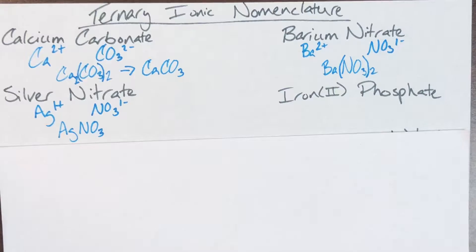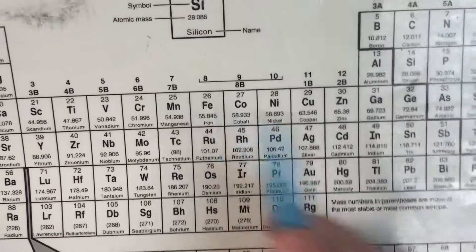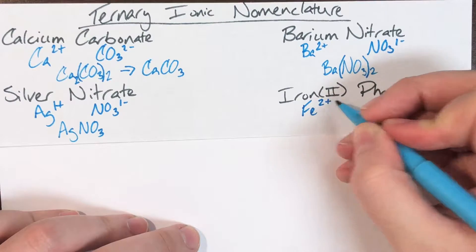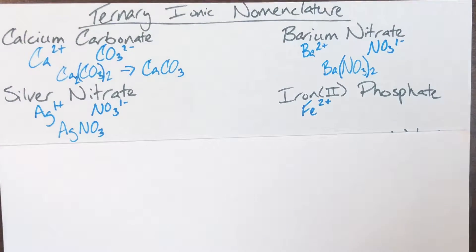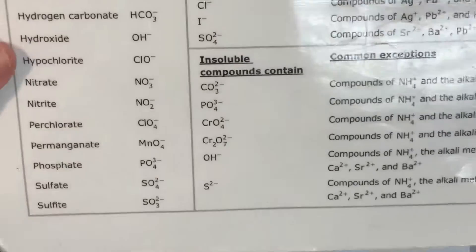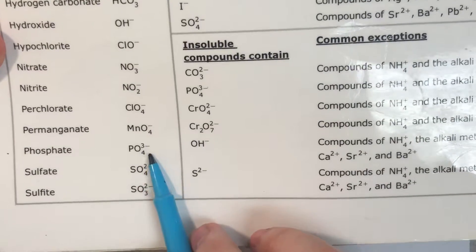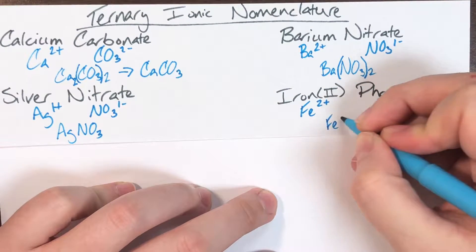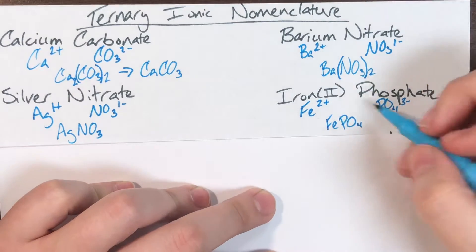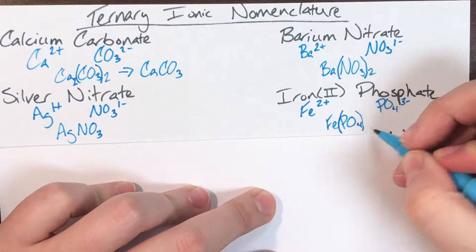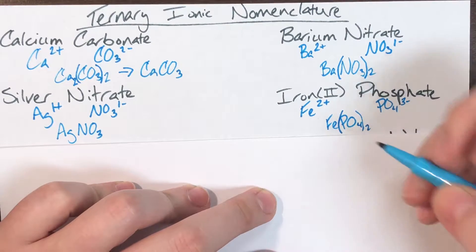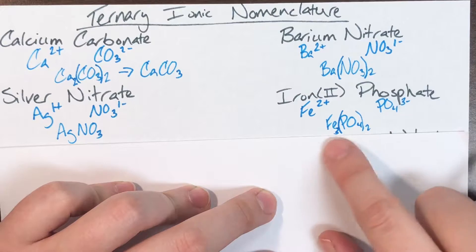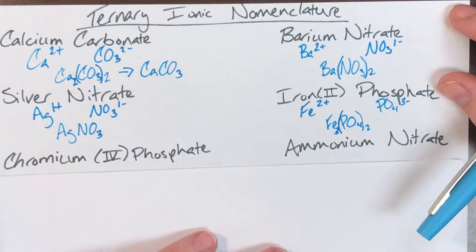Iron(II) phosphate: iron is Fe, element 26, and iron(II) means a charge of positive two. Phosphate, ending in '-ate,' is a polyatomic ion found as PO₄³⁻. Exchanging charges for subscripts, iron's 2 becomes phosphate's subscript — so phosphate needs parentheses — and phosphate's 3 becomes iron's subscript. The ratio 3 to 2 cannot be simplified, giving Fe₃(PO₄)₂.